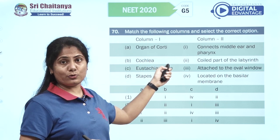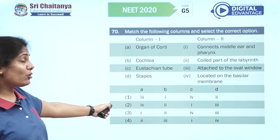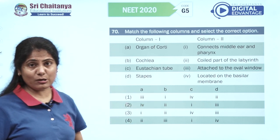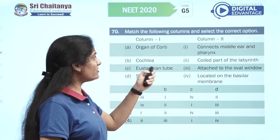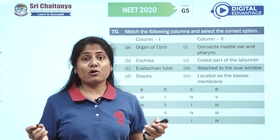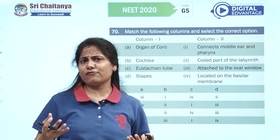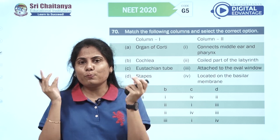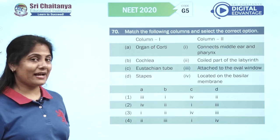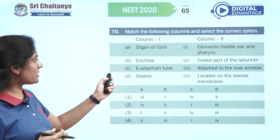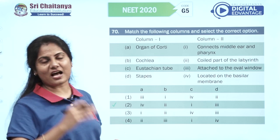Organ of Corti is for hearing, located on the basilar membrane — A4, only one option which is two. Cochlea is the coiled part of the labyrinth. Eustachian tube connects the middle ear and the pharynx and equalizes pressure — when you take a flight to high altitude you feel it opening to equalize pressure on either side of the tympanum. Stapes is attached to the oval window. The second option is the right option.